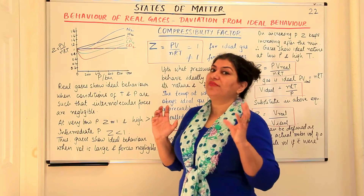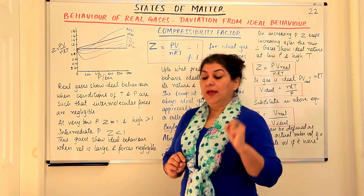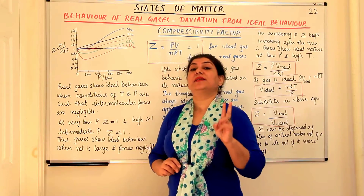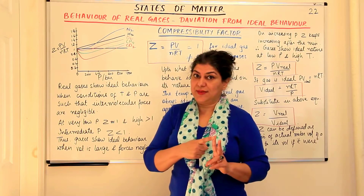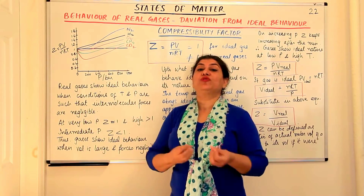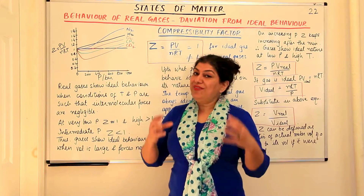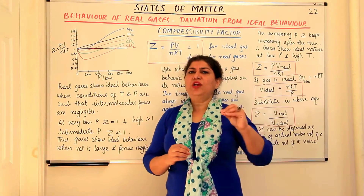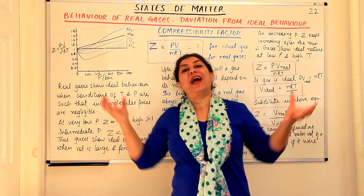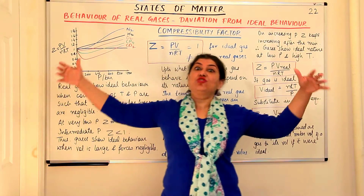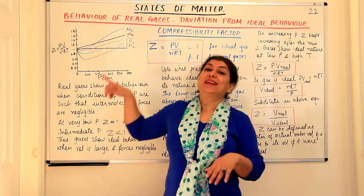Let us understand this graph better. Think logically — when would a real gas show ideal behavior? In the previous video I told you there were two faulty assumptions in the kinetic molecular theory of gases: first, that there are no intermolecular interactions; and second, that the volume occupied by the molecules is negligible compared to the total volume of the gas. If we increase the volume so much that the molecular volume actually becomes negligible in comparison, that is when the gas will behave ideally.